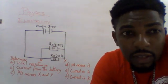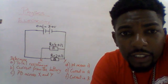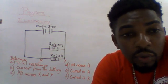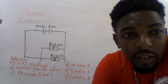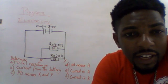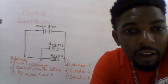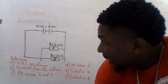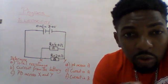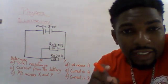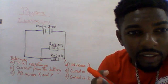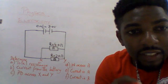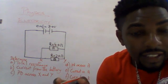We have a second question — a parallel circuit. Why is it a parallel circuit? Because the components are connected in parallel. One way to identify that is by looking at the polarity of the components. In a parallel circuit, the components are connected positive to positive and negative to negative, rather than positive to negative.